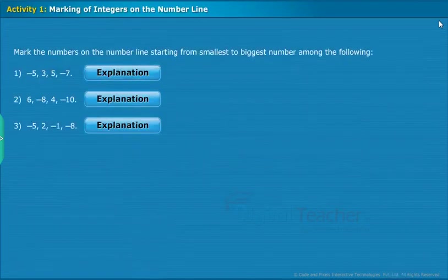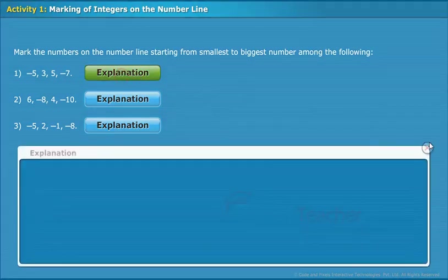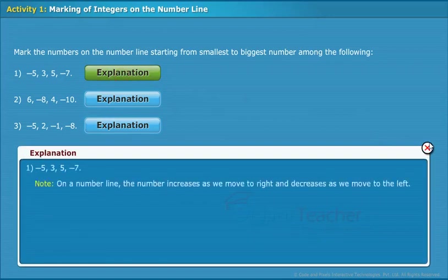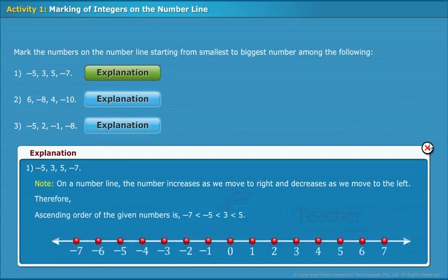Let us perform an activity on marking of integers on the number line. Mark the numbers on the number line starting from smallest to biggest. Note: on a number line, numbers increase as we move to the right and decrease as we move to the left. Therefore, the ascending order of the given numbers is: minus 7 less than minus 5 less than 3 less than 5. The ascending order representation is: minus 7, minus 5, 3, and 5.